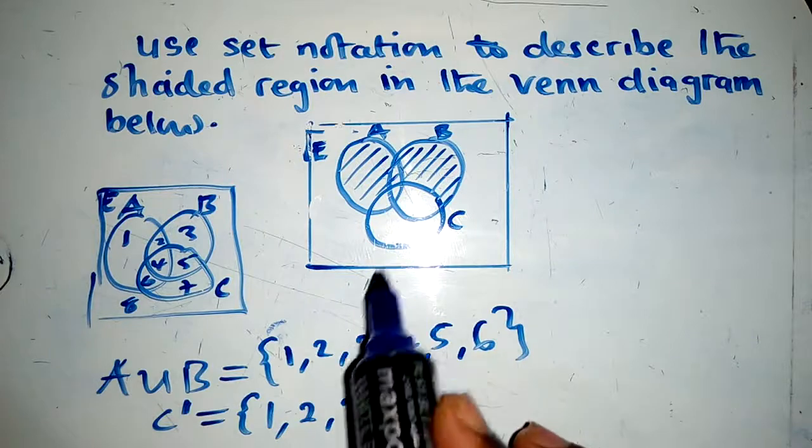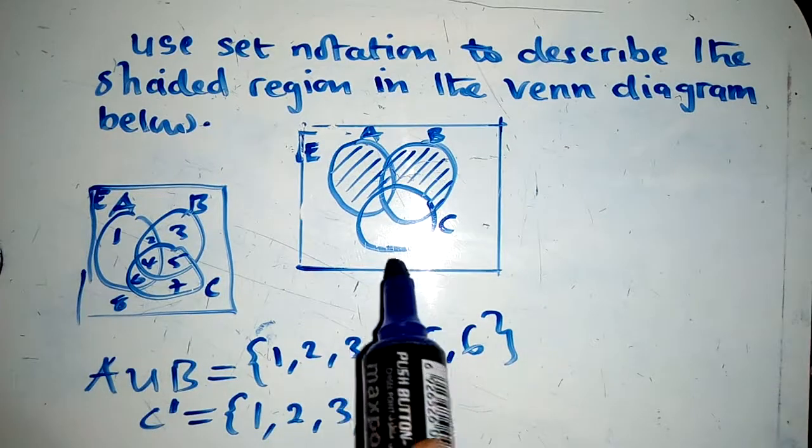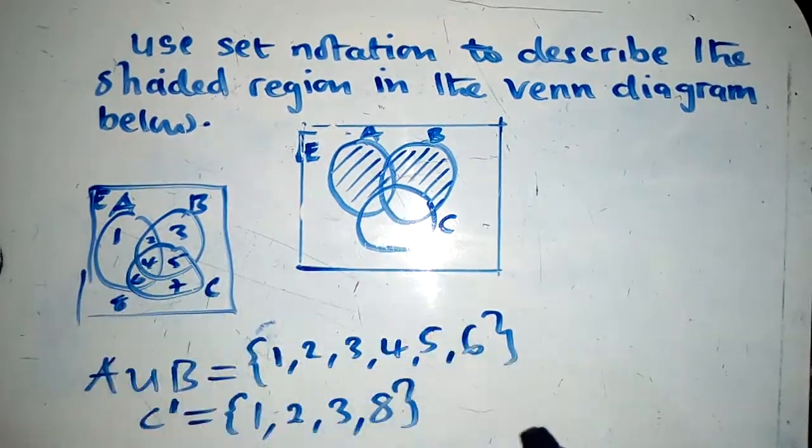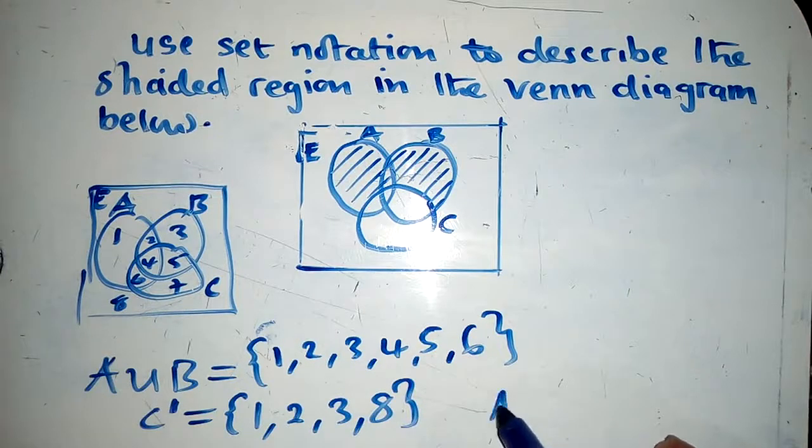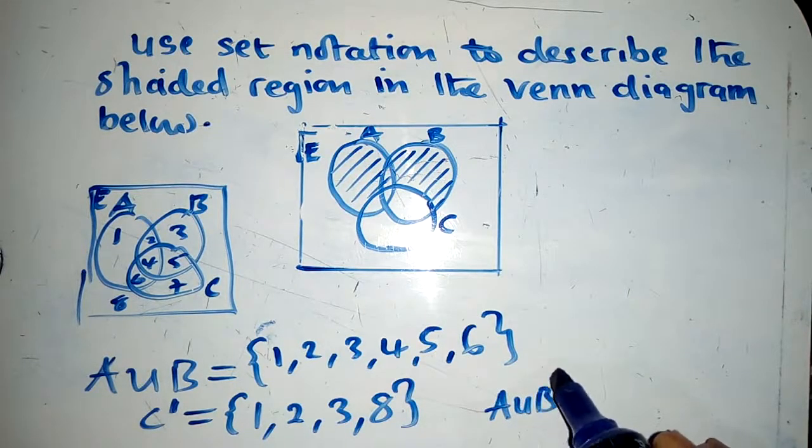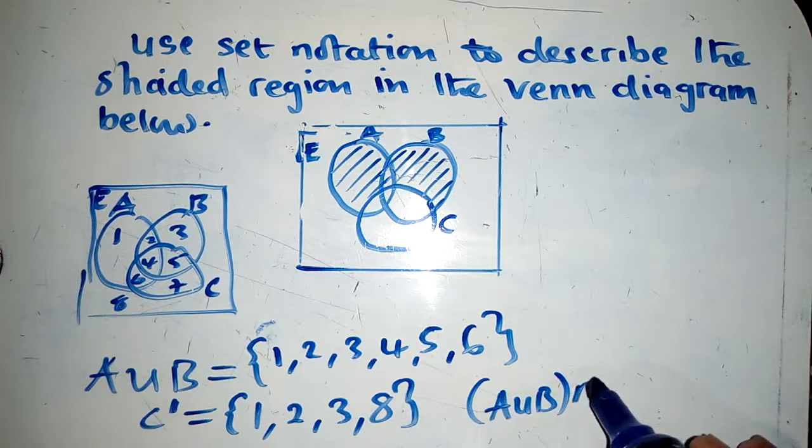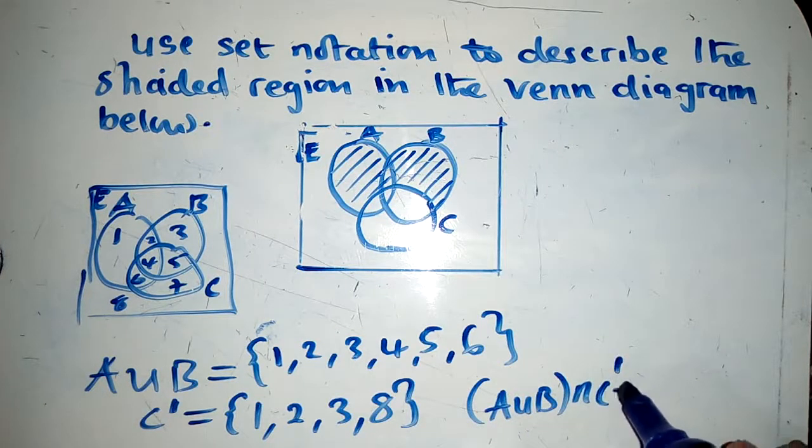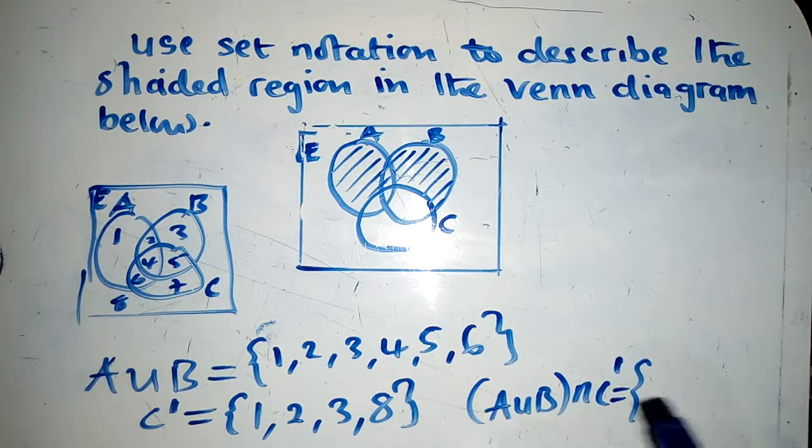So in order for us to show this shaded region, we'll say A union B intersect C complement. This will look like this intersection.